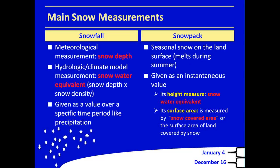There are two main measurements of snow variables in observations. The first is snowfall, which has both a meteorological measurement and a hydrologic and climate model measurement. The meteorological measurement is snow depth — when snow falls, it's fluffy and collects on the ground, and people take daily snowfall measurements of the height of the snow column. However, in hydrologic and climate models, we measure it in terms of snow-water equivalent — the snow depth times the snow density. You take that column of snow and melt it down to water. This is a much cleaner measurement because you're actually tracking how much water is in the snow. Depending on the temperature when the snow falls, it can be fluffy or very dense. Snowfall is taken as a value over a specific time period, similar to precipitation.